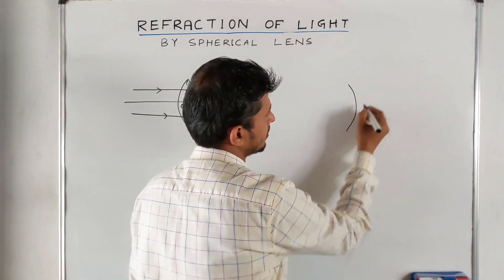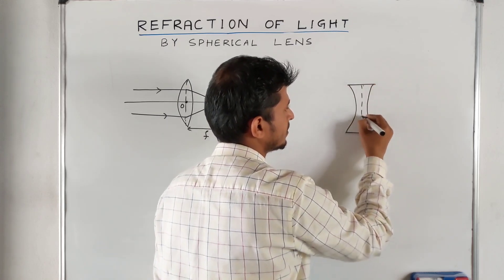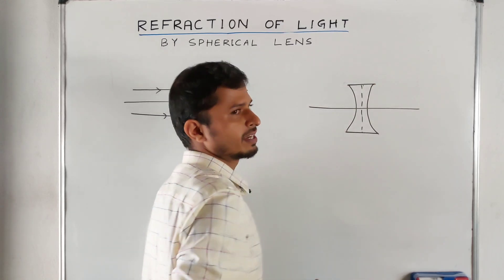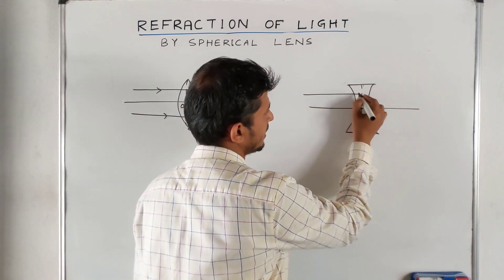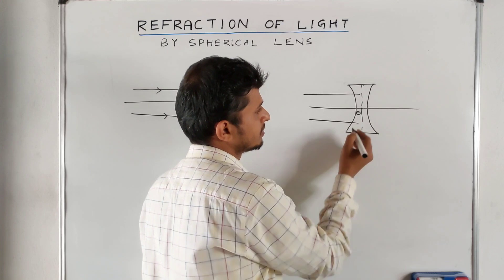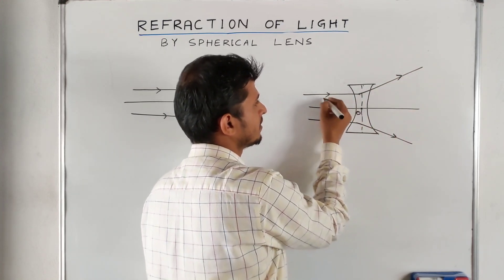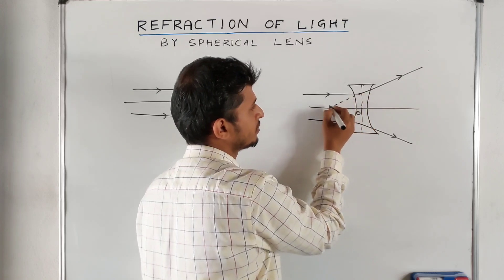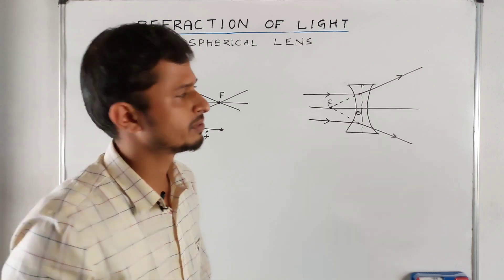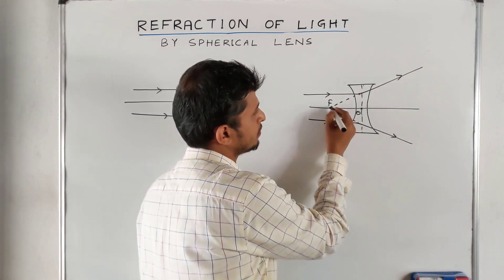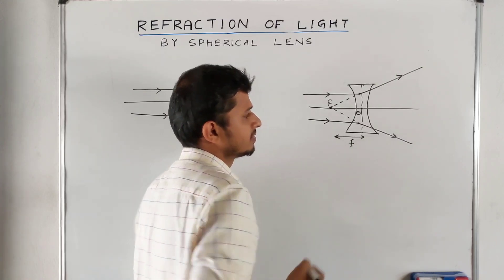For the concave lens, this is the principal axis and the point is called the optical center. A parallel ray of light passing through the lens bends and diverges in these directions. It appears to meet at a point on the same side, and this point is called the focus or focal point. The distance between the focus and the optical center is called the focal length.